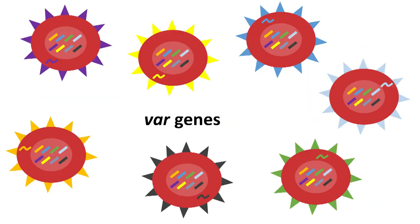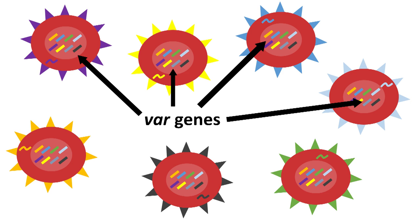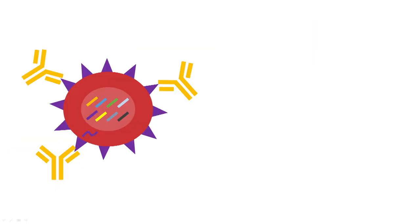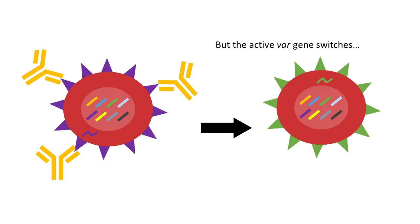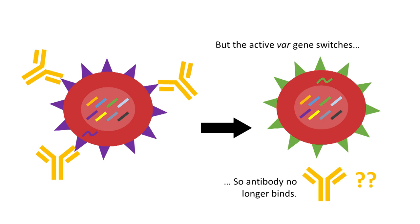One group of proteins are encoded by a group of about 60 genes called var genes. The parasite can switch which of its 60 var genes are expressed at any given time on the infected red blood cell, and because the var genes are really different from each other, when you switch from one var gene to a different one, the antibodies can no longer recognise the new protein.